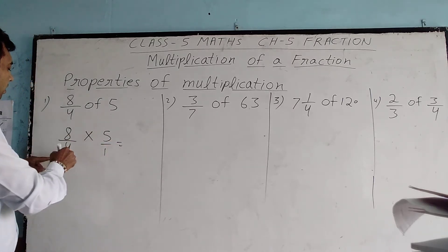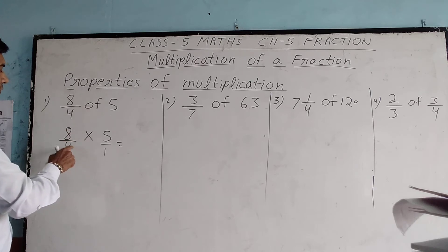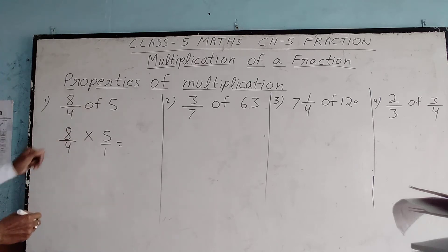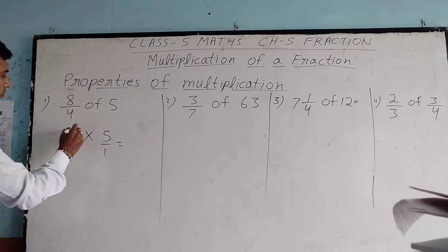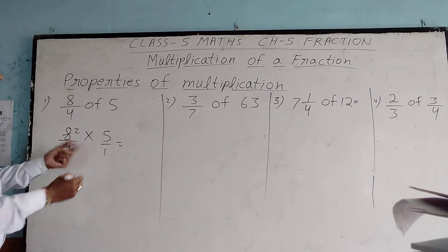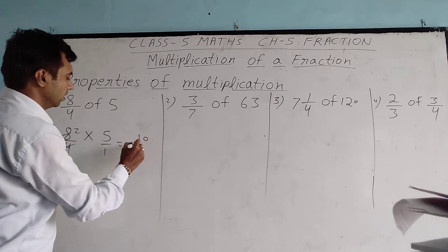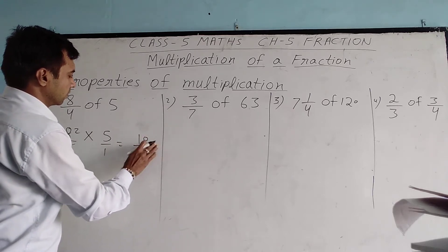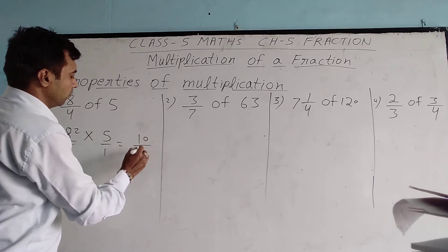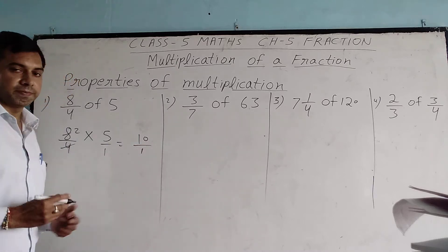Here we can cut: 8 by 4 — 4 goes into 8 twice. So we get 2 multiplied by 5, which equals 10. Since the denominator is 1, we can simply write 10 as the answer.